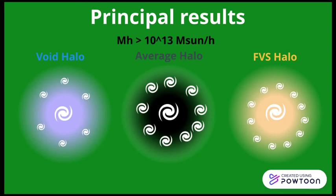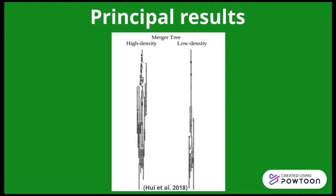We conclude that there exists a correlation between the particular history of the formation of halos in regions with extreme values of density and the way that galaxies populate them.